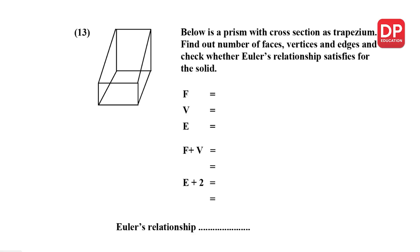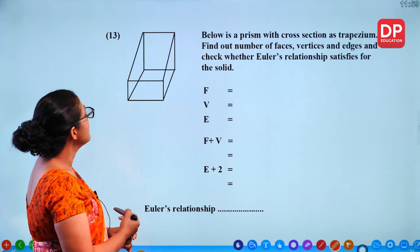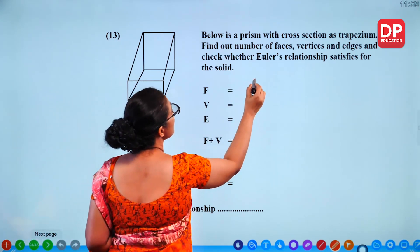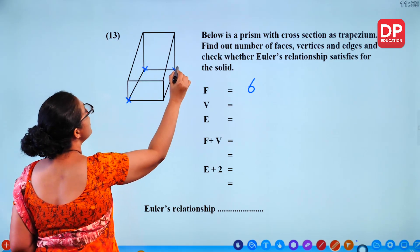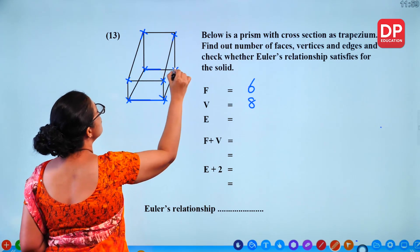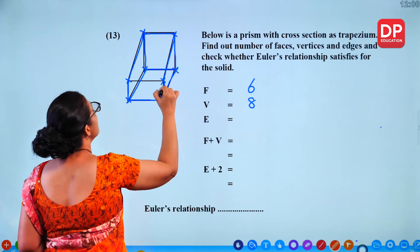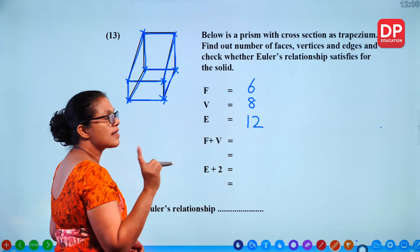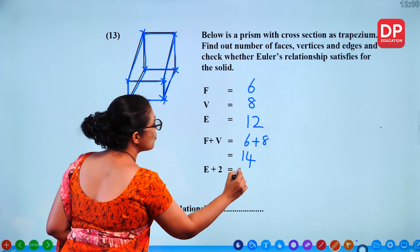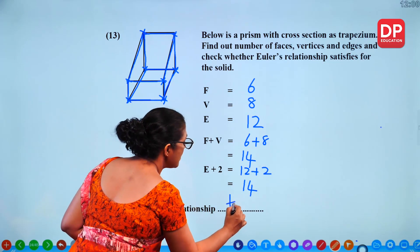Below is a prism with cross-section as a trapezium. Find faces, vertices and edges and check Euler's relationship. Faces: 6. Vertices: 8. Edges: 12. Checking: 6 plus 8 equals 14, and 12 plus 2 equals 14 — Euler's relationship is true, same as a cube or cuboid.